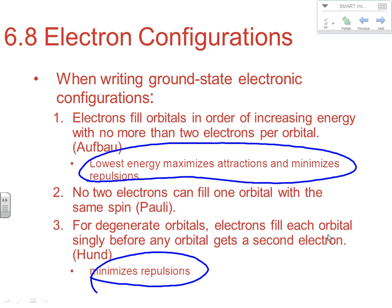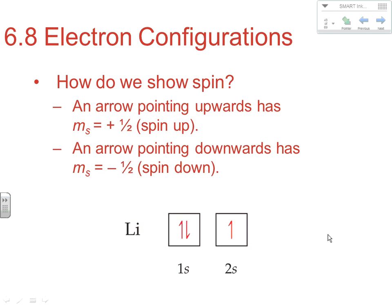So really, when we're doing electron configurations, these are our three guiding principles: Aufbau, Hund's Rule, and Pauli Exclusion Principle. Those are how we add electrons.